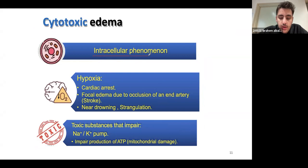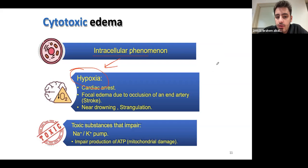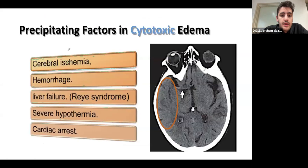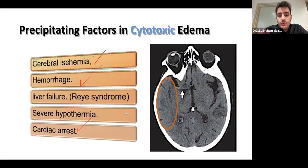When it comes to cytotoxic edema, it's an intracellular phenomenon — fluid accumulates inside the cells. It most commonly happens due to hypoxia. This correlates with the cellular changes you should have covered in pathology: the first step in cellular injury is cellular swelling, and that's what cytotoxic edema represents. It's usually due to the sodium-potassium pump failing, causing sodium to accumulate inside cells and drawing in water.